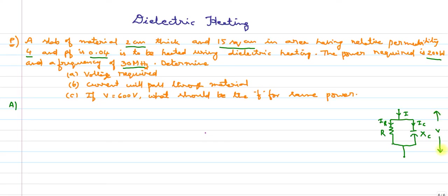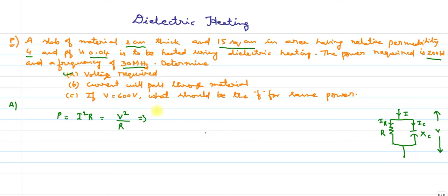Once we understand this circuit model, we can solve the problem step by step. Power is defined as P = I²R, which is also equal to V²/R. This implies that voltage V = √(P·R). We know power is given as 200 watts, but we need to find resistance R.